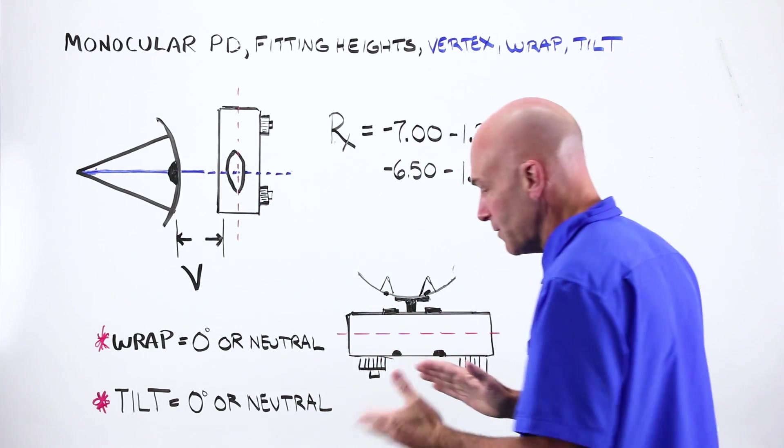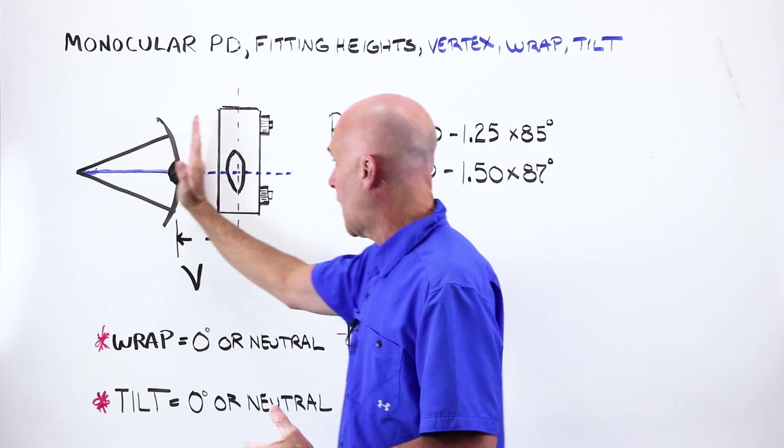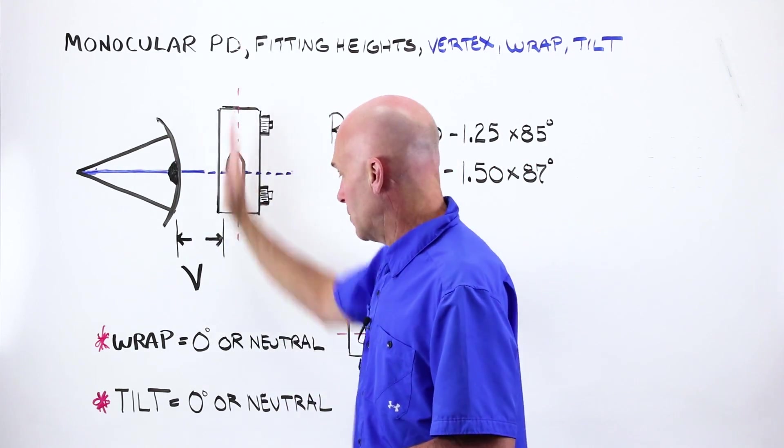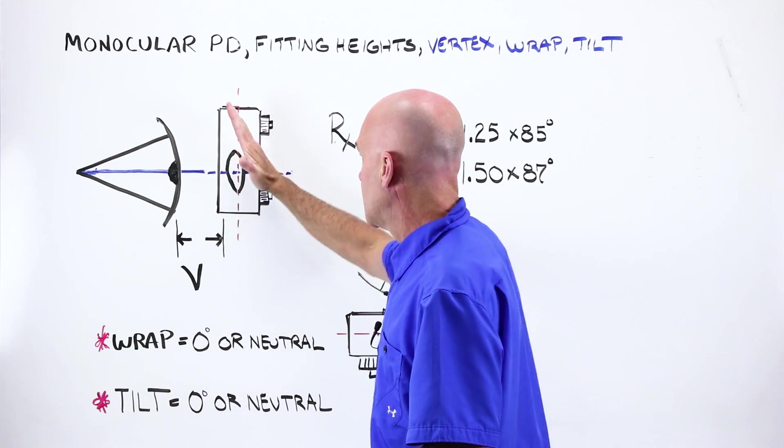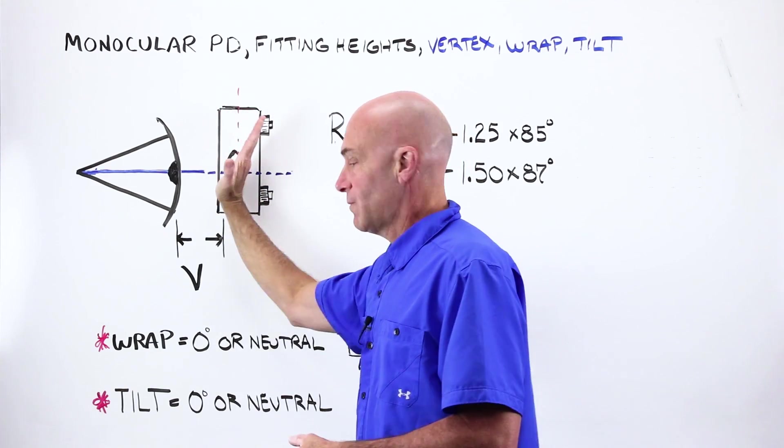If you think about the phoropter sitting in front of someone's eye, it's neutral this way. The phoropter doesn't tilt on this axis in front of your eye.